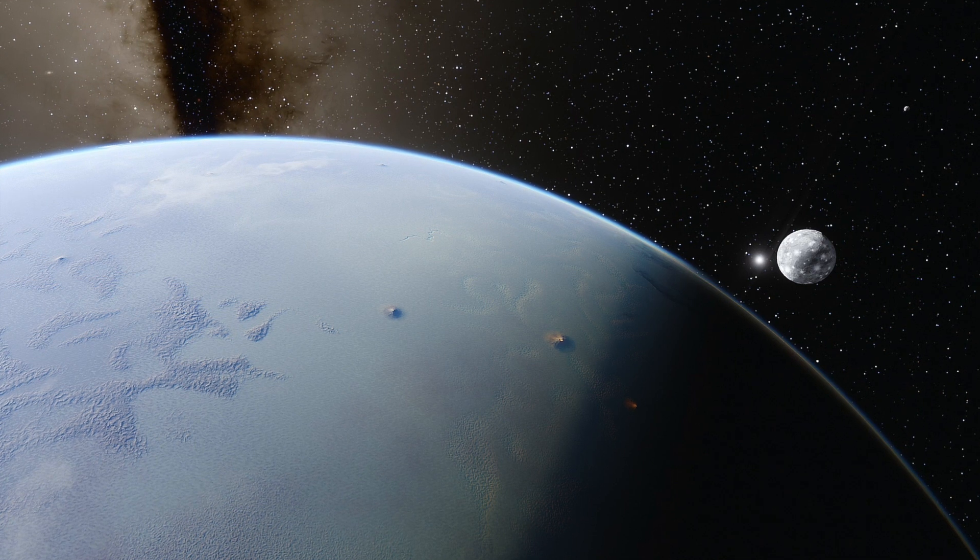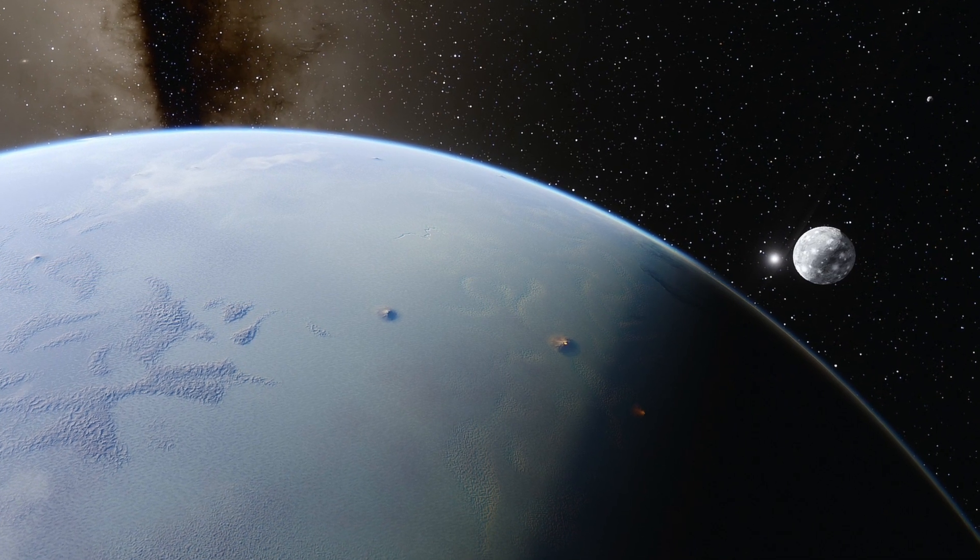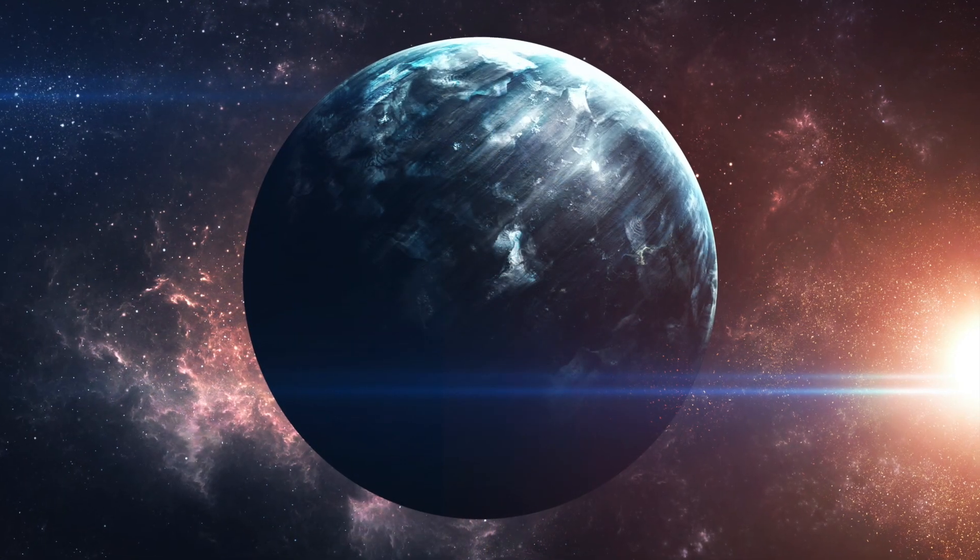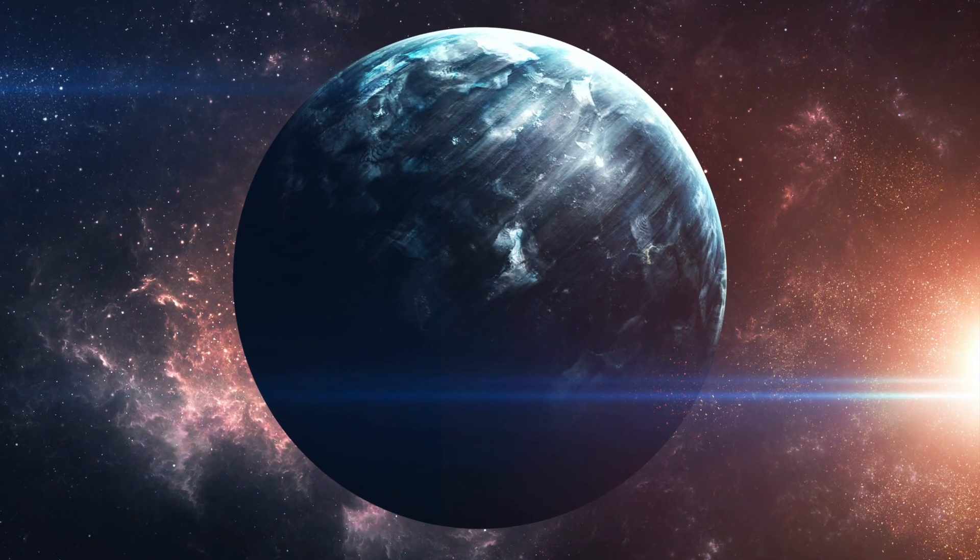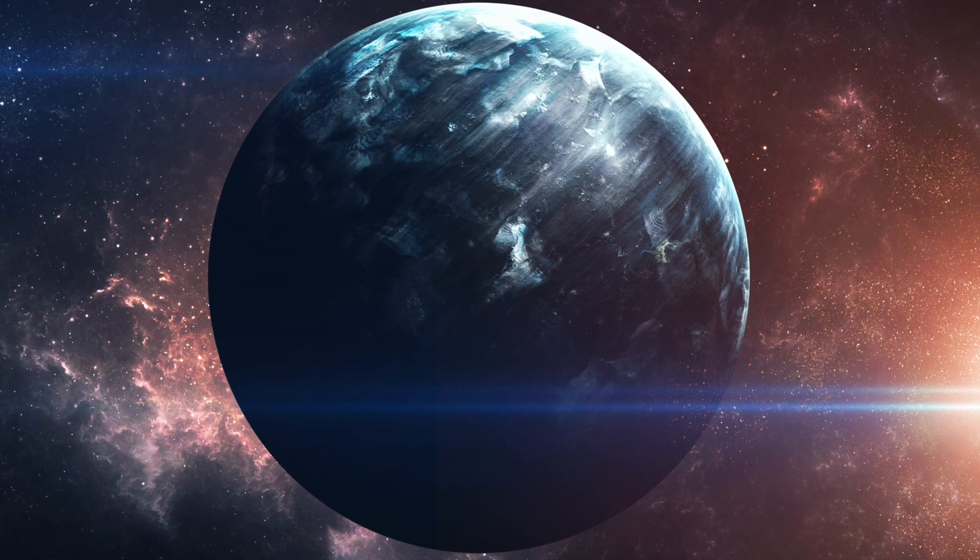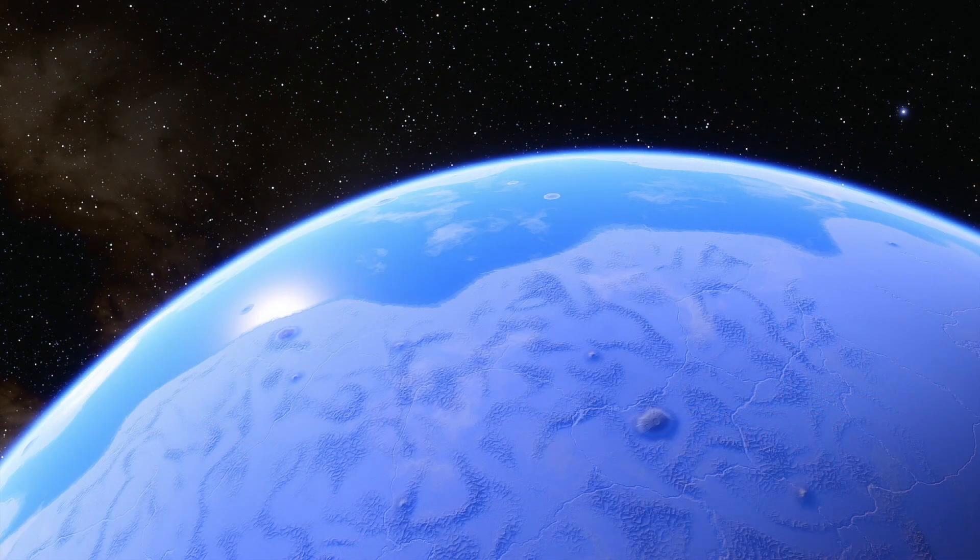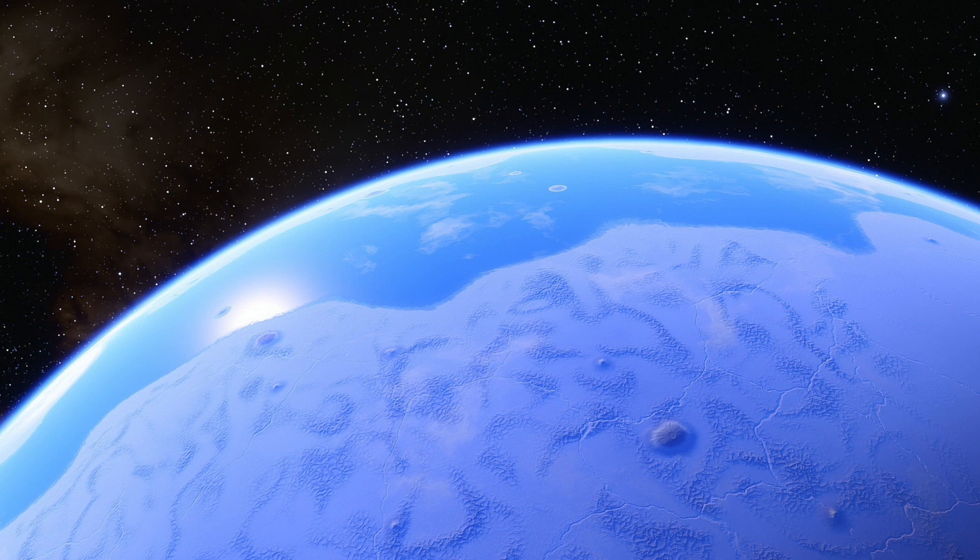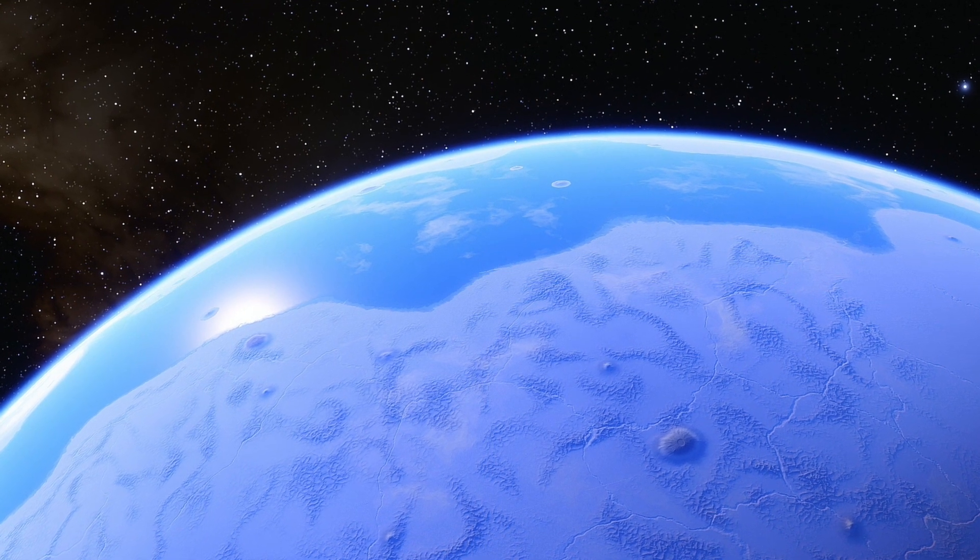Kepler-452b orbits a Sun-like star, similar to the way Earth orbits the Sun. The main issue confronting the exploration and further discovery of Kepler-452b is that it's incredibly far away from Earth. It's around 1,400 light years away, meaning it would take a spacecraft approximately 26 million years to reach.